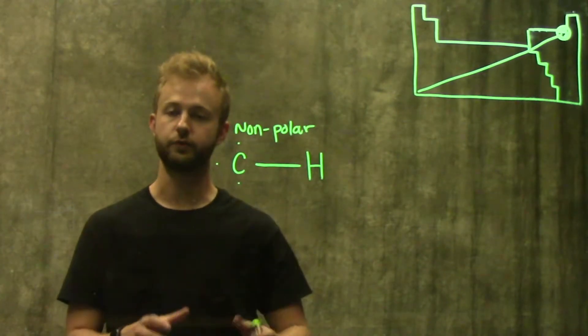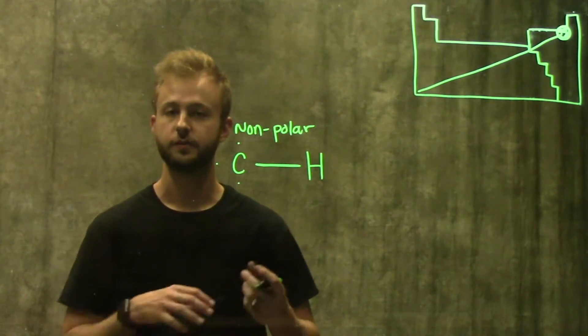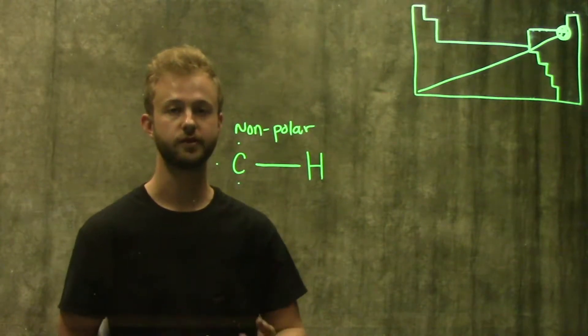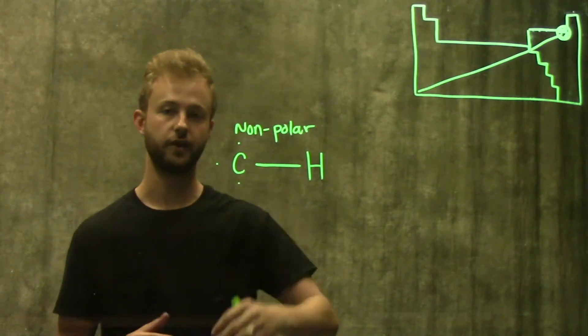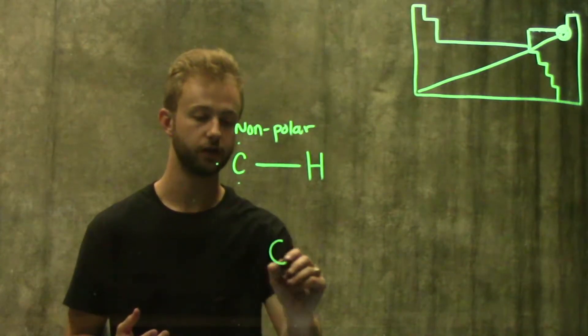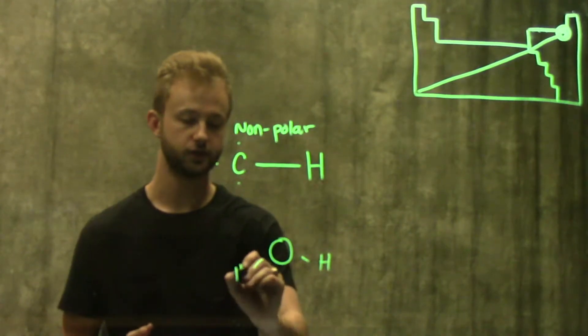This gets a little different when we move on to polar covalent bonds. Polar covalent bonds are going to be between two atoms that have electronegativities that are a little bit more different than non-polar covalent bonds. A good example of this is going to be seen in water molecules with the bond between oxygen and two hydrogens.